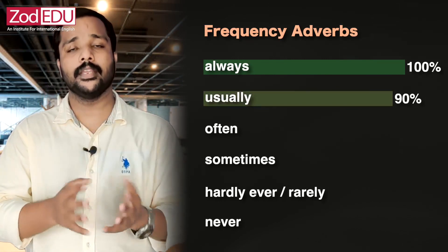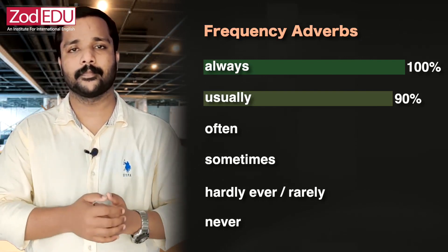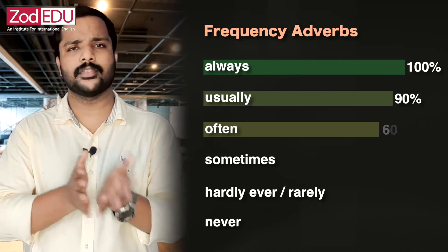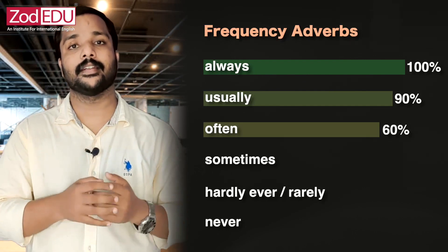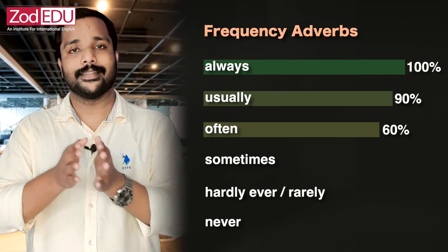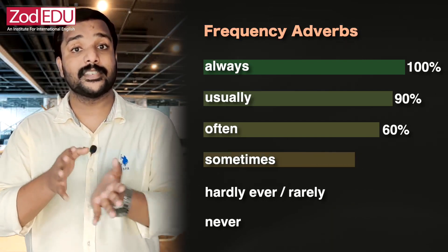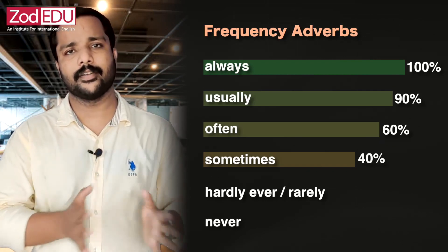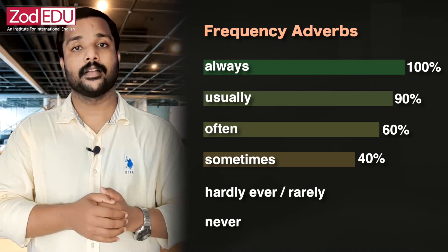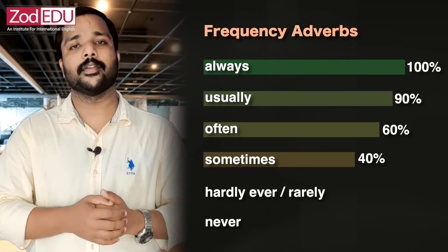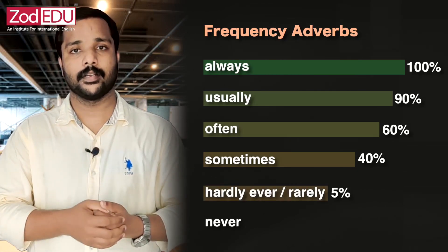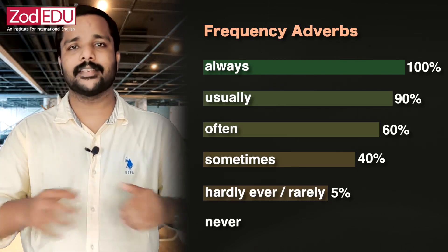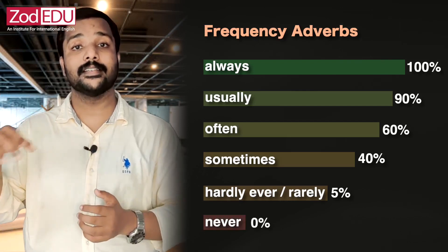Usually, normally, or generally mean the same thing. Often is around 60 to 70 percent of the time. Sometimes is around 30 to 40 or 40 to 50 percent of the time. Hardly ever or rarely is a very low percentage. Never is zero percent.